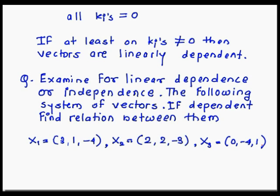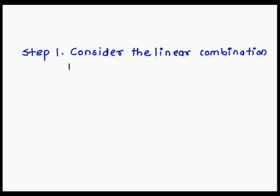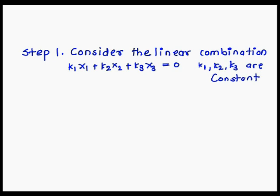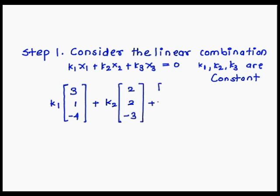How to solve this? We go step by step. In the first step, we write the linear combination: k1*x1 + k2*x2 + k3*x3 = 0 vector, where k1, k2, k3 are constants. Now we substitute the values of x1, x2, x3 in the form of column matrices. By substituting, we get k1*(3, 1, -4) + k2*(2, 2, -3) + k3*(0, -4, 1) = (0, 0, 0). We then write this in matrix form, with the first column as the first vector, second column as the second vector, and third column as the third vector, multiplied by (k1, k2, k3) = (0, 0, 0).